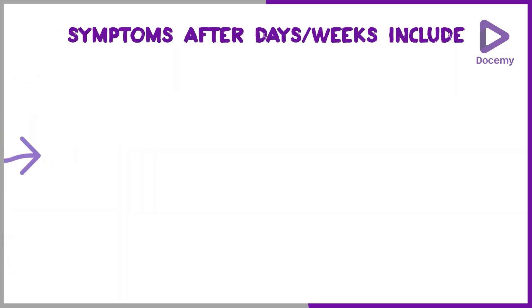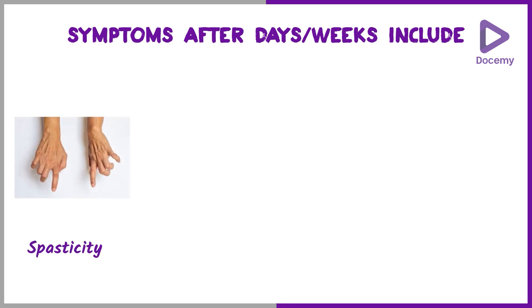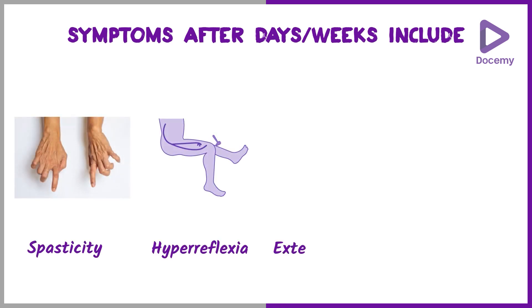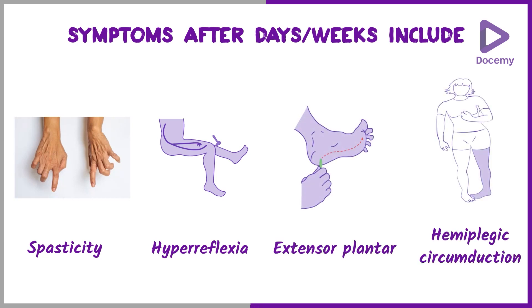After variable periods of time, patients will slowly develop — maybe after days or weeks — spasticity, hyperreflexia, extensor plantar, and a hemiplegic circumduction gait.